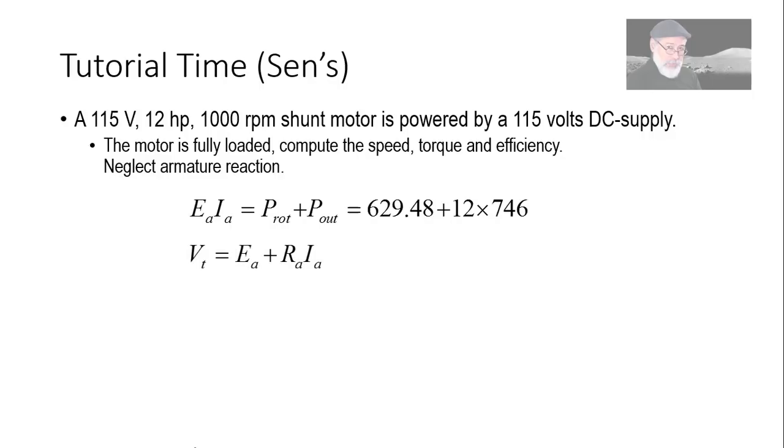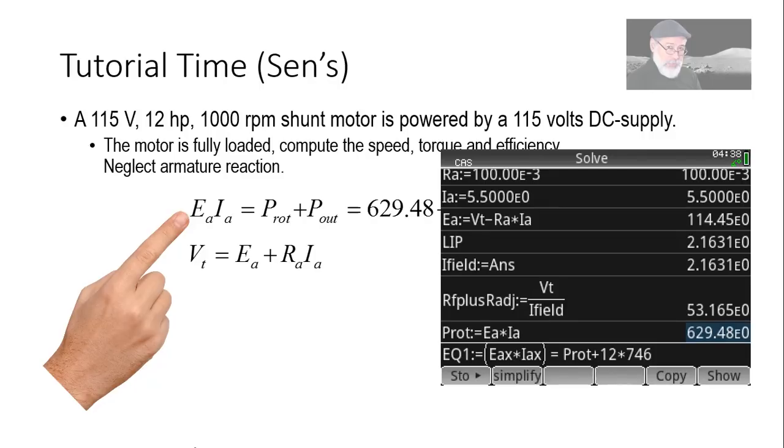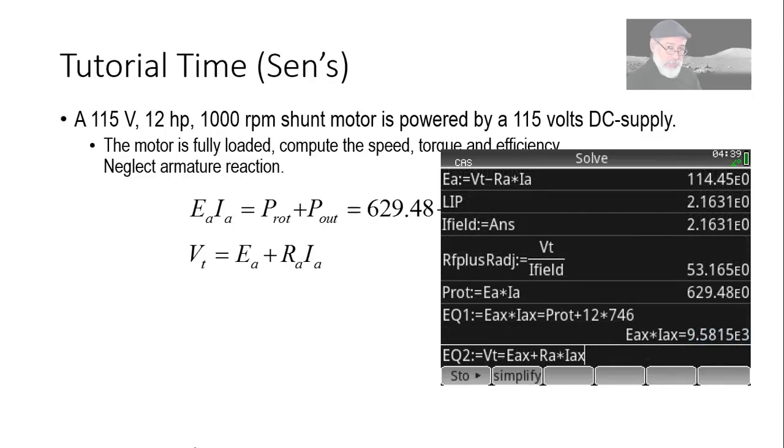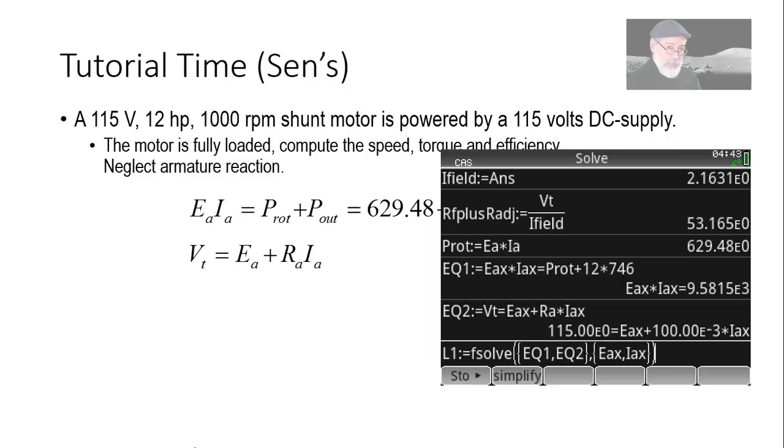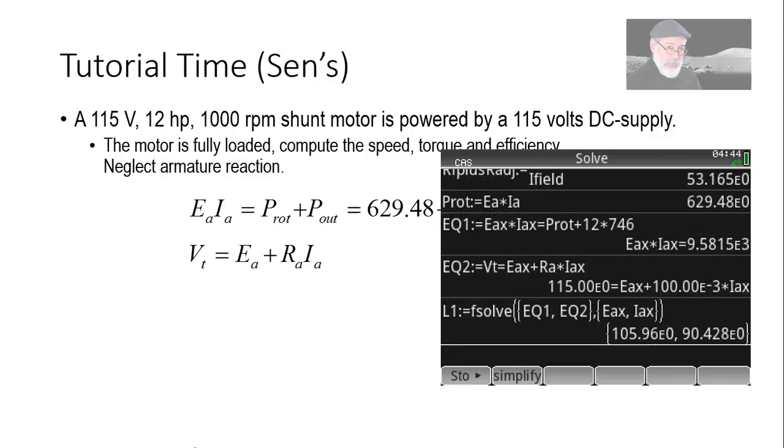And the other equation, because we have two unknowns, Ea and Ia, the other equation would be the loop equation of the armature circuit. Vt is Ea·Ia plus the drop in the resistance of the armature. Two equations, two unknowns. We solve for Ia in the second one, substitute in the first one, and then we have an equation in Ea that we can solve. In my case, I'm going to use a calculator. First equation is Eax times... Hey, you say, who is Eax? Well, Ea and Ia are variables I've already computed, so I'm giving them new names. These are the new values of those. And the second equation is the loop equation of the armature circuit.